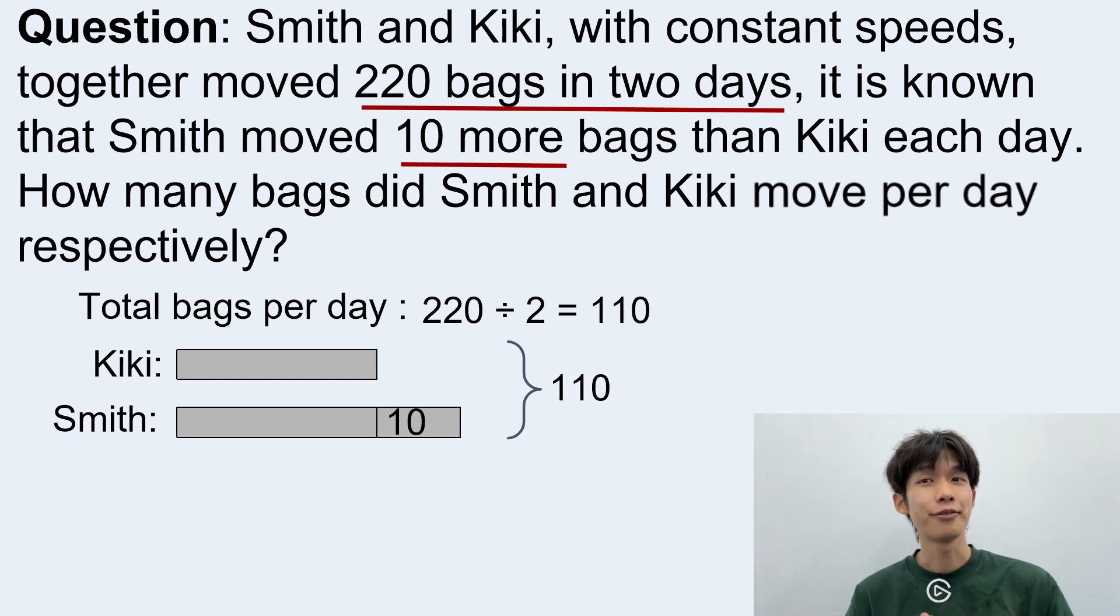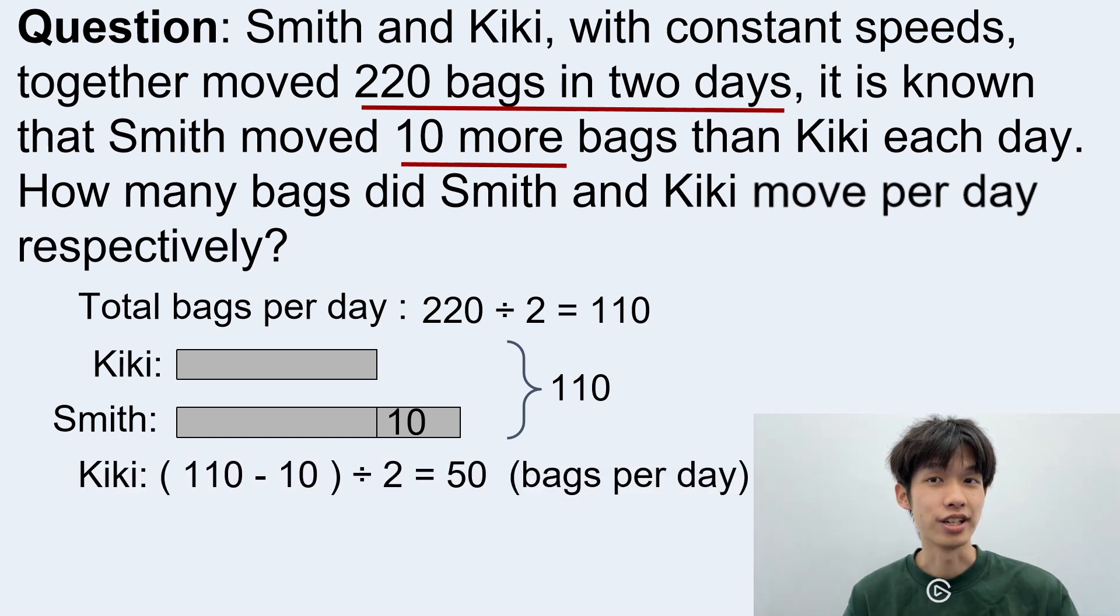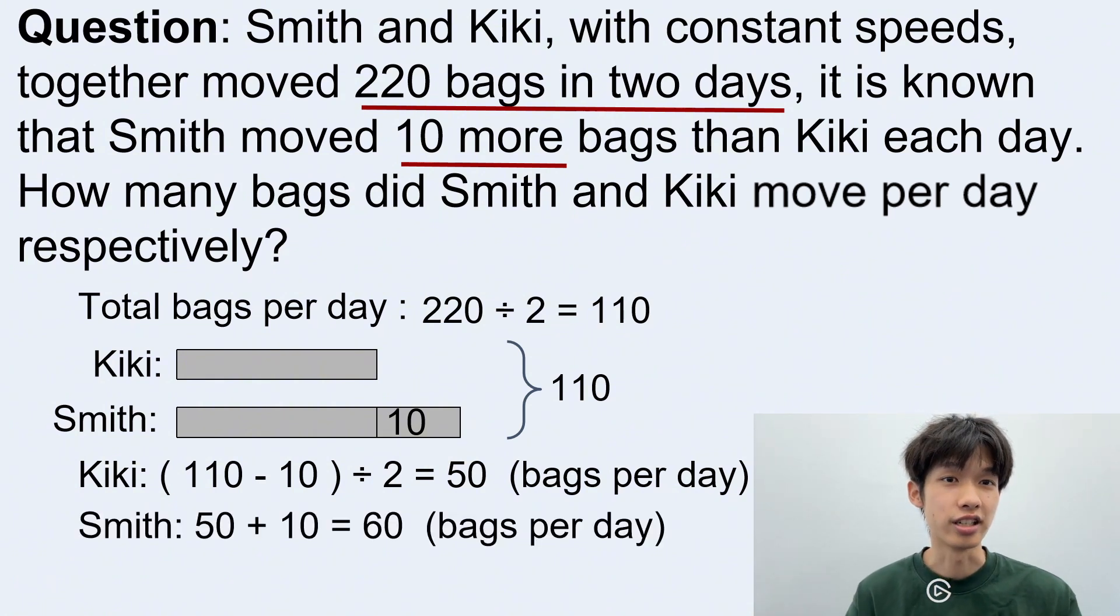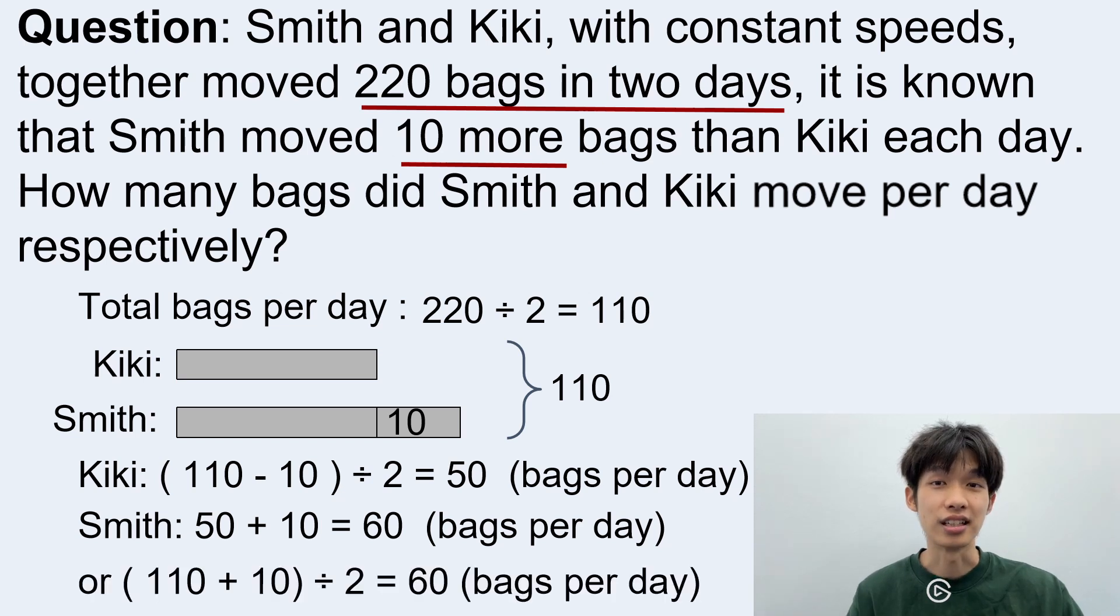So from here, if we are trying to find Kiki's speed, what should be the equation here? Remember from the previous question, we can use the sum minus the difference and give us 50, which is Kiki's speed. And if we are trying to find Smith's speed, we can use the 50 and plus the 10, which is the difference to get 60, which is Smith's speed. Or we can also use another method from the previous example, which is the sum plus the difference and divide it by 2, which also gives us 60. And here we have already solved this question.